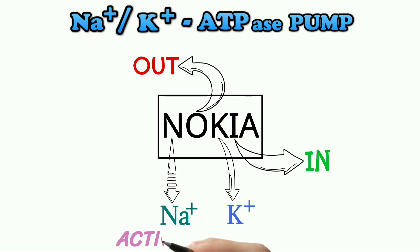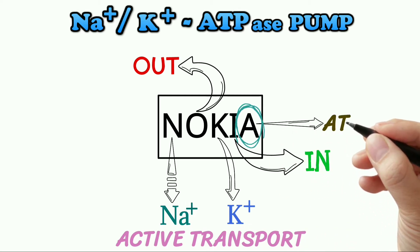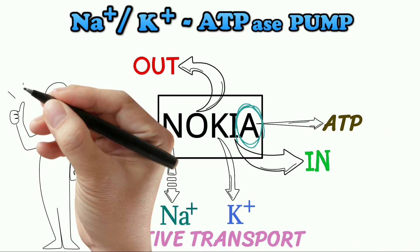This pump is an example of active transport, hence it works at the expense of an ATP. So this A is for ATP, and that completes this mnemonic.